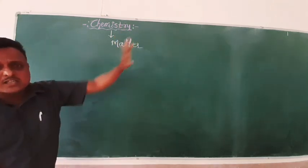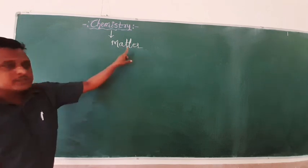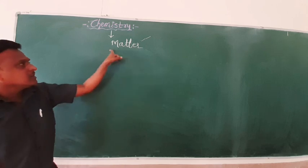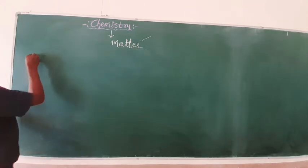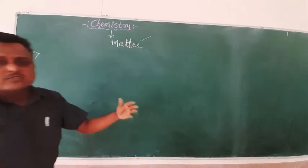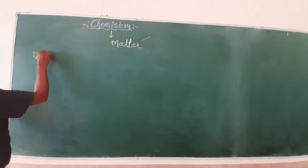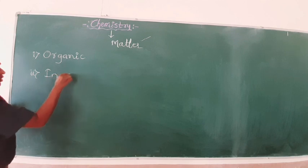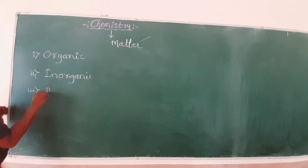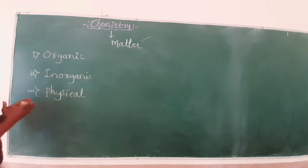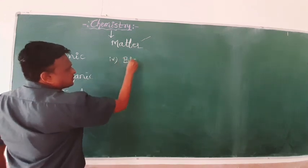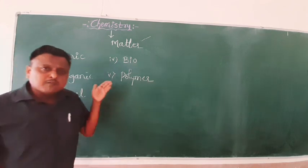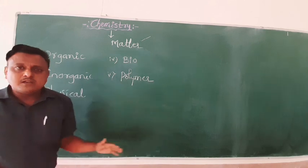Chemistry is a branch of science which deals with the study of matter — its physical states and chemical states, physical properties and chemical properties. Based on this matter, chemistry is divided into various types: organic chemistry, inorganic chemistry, and physical chemistry as the three major branches. Apart from these, we have biochemistry, polymer chemistry, industrial chemistry, and pharmaceutical chemistry.